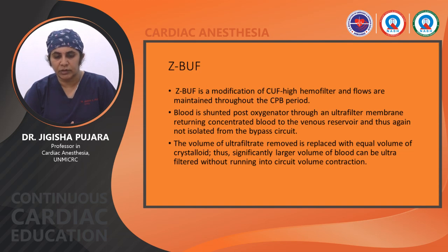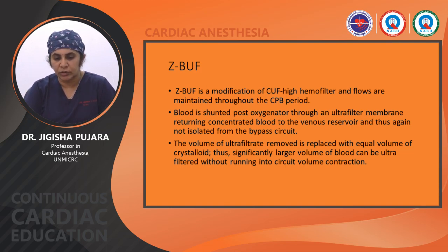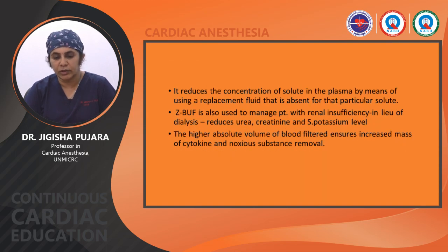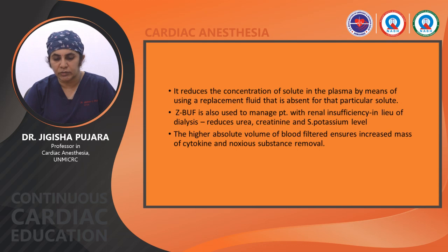Z-BUF is a modification of CUF. High hemofilter flows are maintained throughout the CPB period. Blood is shunted post-oxygenator through an ultrafiltration membrane returning concentrated blood to the venous reservoir; the volume of ultrafiltrate removed is replaced with an equal volume of crystalloid — Plasmalyte, Ringer's lactate, dialysate, or sodium chloride. This allows significantly larger volumes of blood to be ultrafiltrated without circuit volume contraction. It reduces the concentration of solutes in the plasma and is also used to manage patients with renal insufficiency, reducing urea, creatinine, and potassium levels.